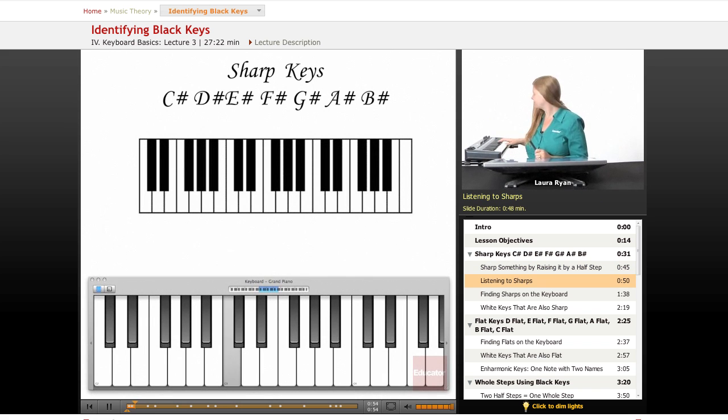Here's a C natural, our middle C. Here's C, there's C sharp. Here's D, there's D sharp. So here's C, D, E, just white keys. Now we're going to add our black keys. It's a smaller interval.